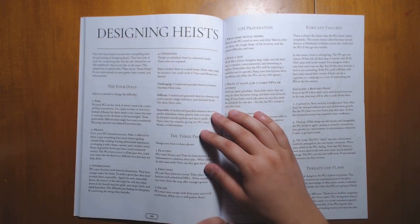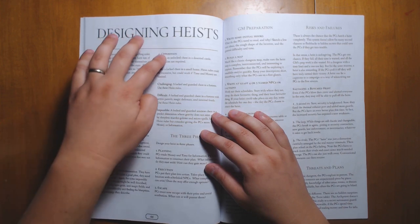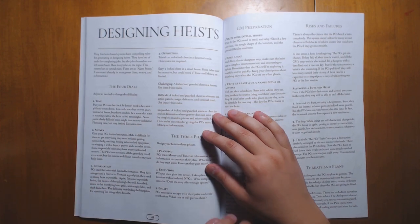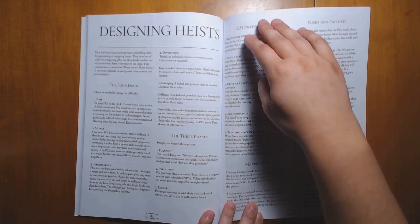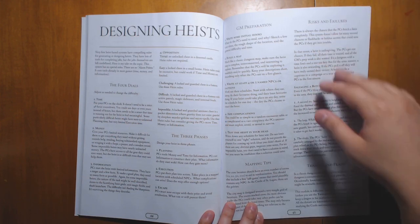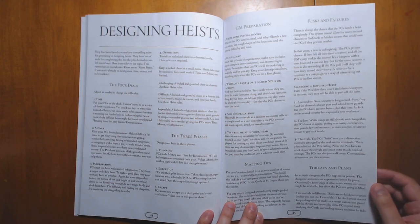There's some general information about designing your own heists. You've got your four dials - time, money, information, and opposition - that you can turn up or down depending on the amount of tension that you want when designing your own heists. Your general three phases, the sorts of things that GMs are going to have to prepare, mapping tips, risks and failures like I mentioned, and threats and plans.